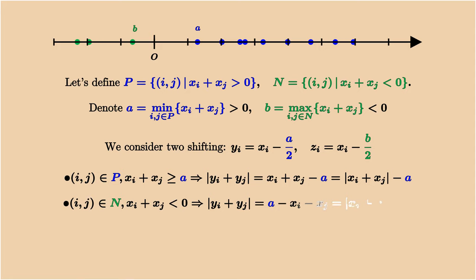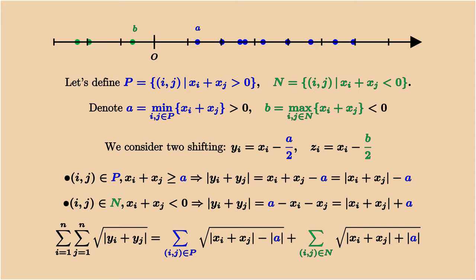In contrast, when i and j is a negative pair, the sum of them is negative. Therefore, the absolute value changes the sign, becoming a minus xi minus xj. This can also be written as the absolute value of xi plus xj plus a. In other words, the square root on the positive part decreases while the square root on the negative part increases.